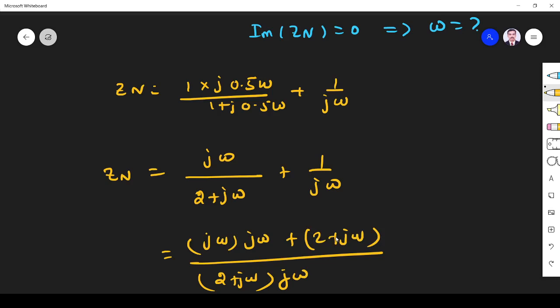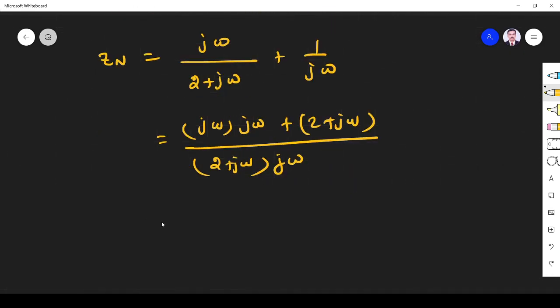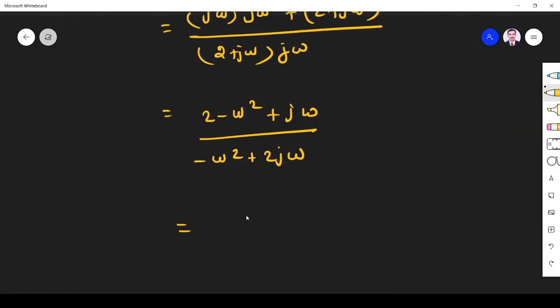...so it is jω times (jω + 2) plus (2 + jω), right? When you multiply this, what you get is -ω² + 2jω. Take a minus outside...